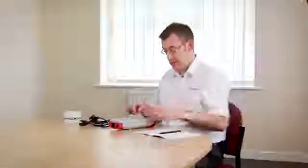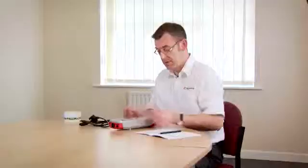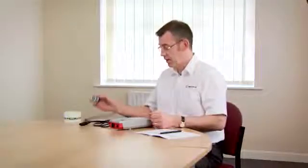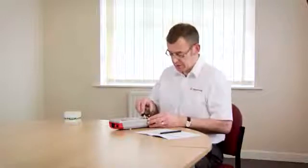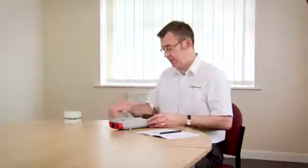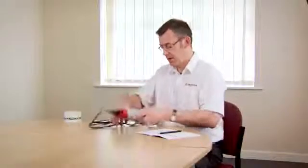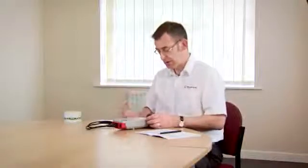Now we're going to test an IEC mains cord. We switch the tester on by holding down the two keys. Connect the mains plug end of the cord into the top of the tester, connect the other end of the cord into the IEC socket on the end of the tester, and press the cord test key.